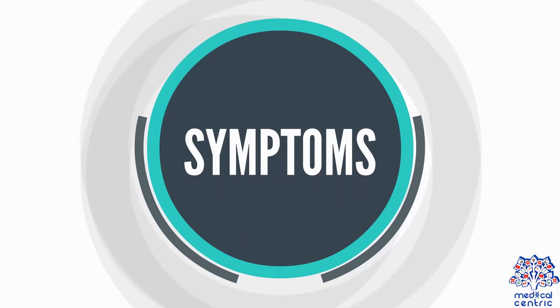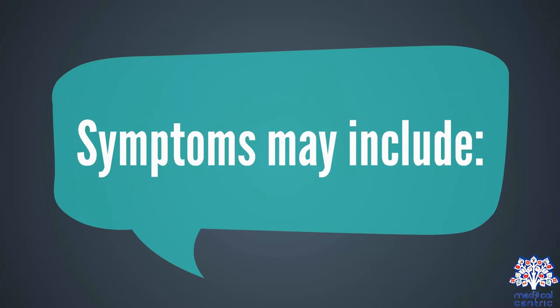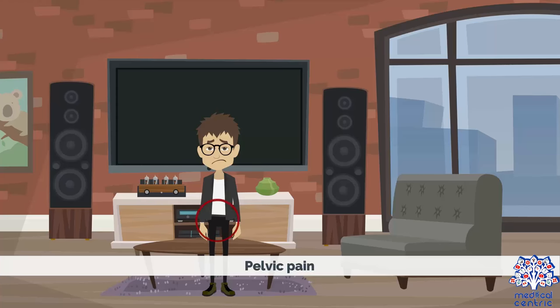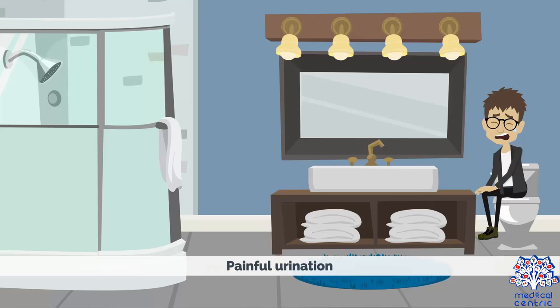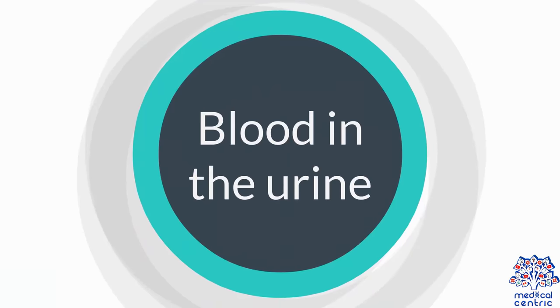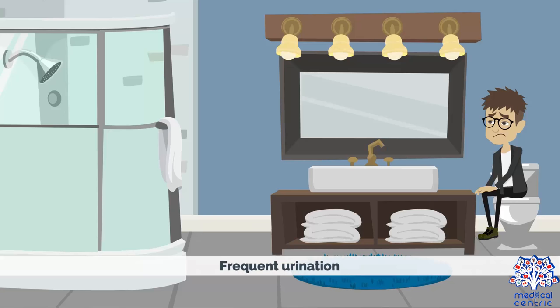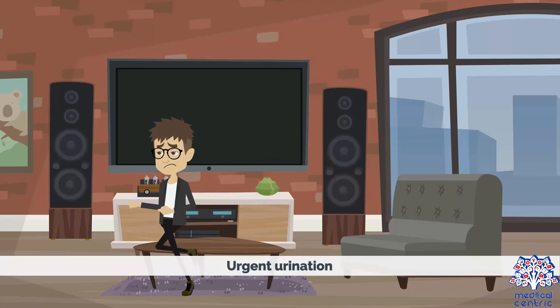Symptoms may include: pelvic pain, painful urination, blood in the urine, pain in the lower back, frequent urination, and urgent urination.